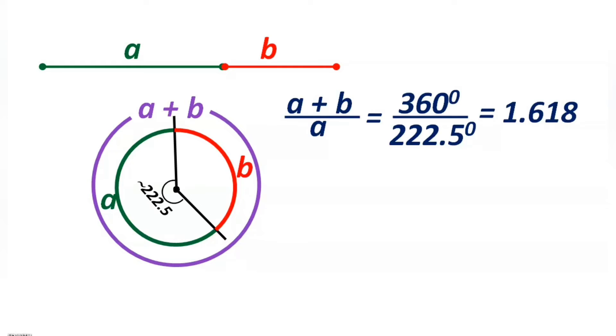Not only this, if you divide a by b also, which is the angle made by arc a by the angle made by arc b at the center. The angle made by arc a is 222.5 degrees, and the angle made by b at the center is 137.5 degrees, which is 360 minus 222.5. If you divide these two things, we will get a ratio equal to 1.618, which is nearly equal to the golden ratio.